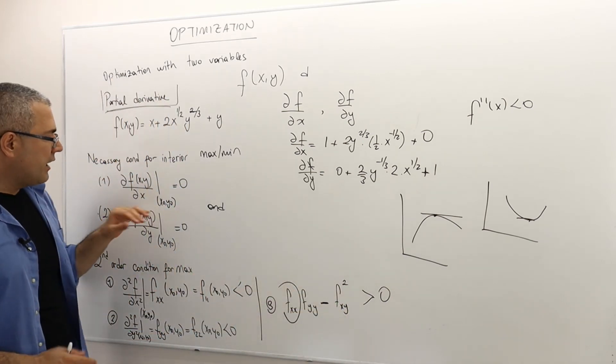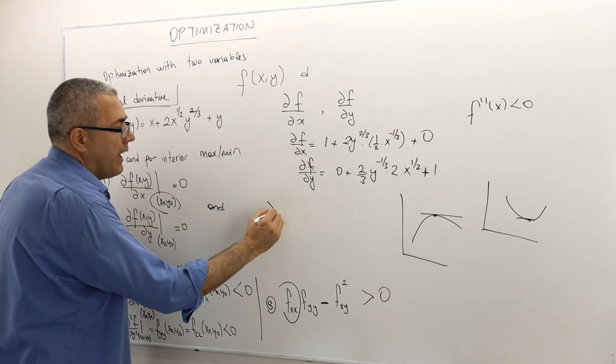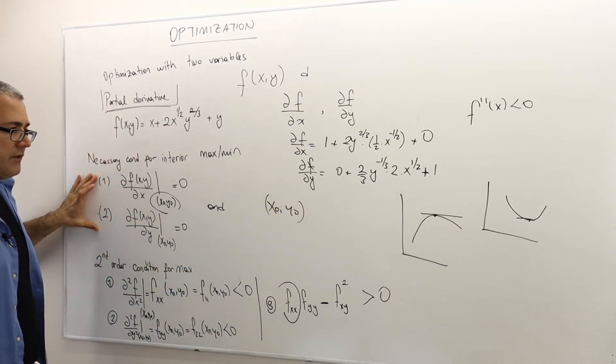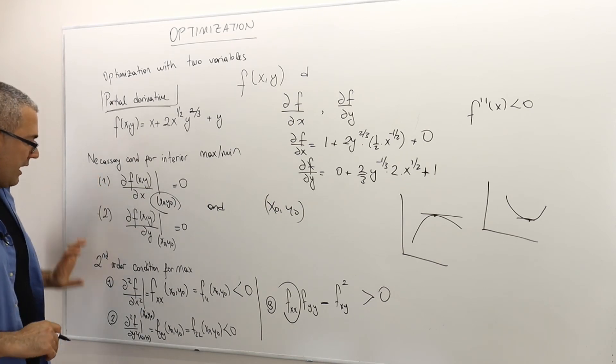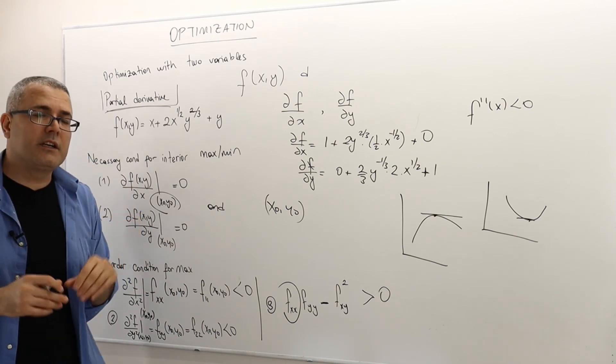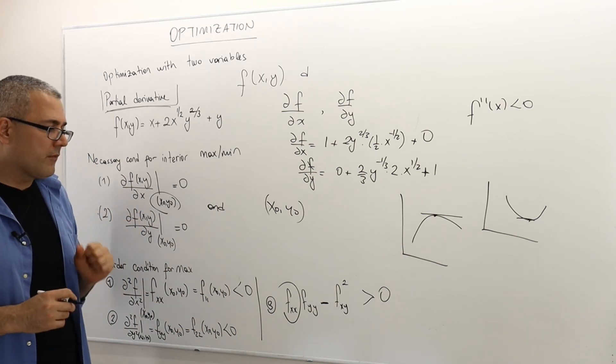So therefore, if my point x naught, y naught satisfies these two conditions, I call it critical point. If it satisfies these three conditions, I say, OK, it is my interior local maximum.